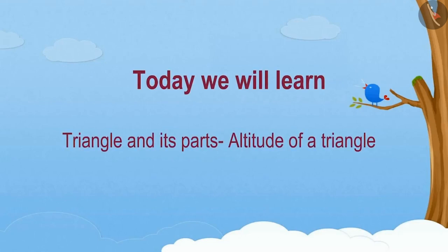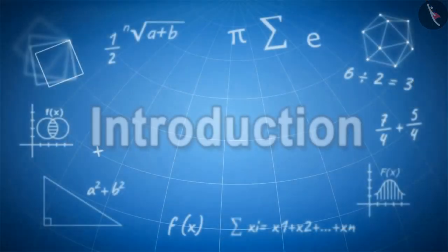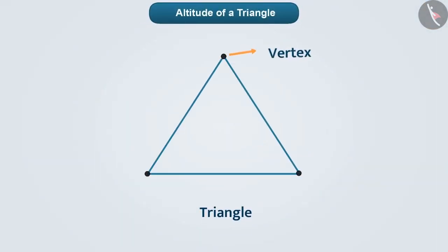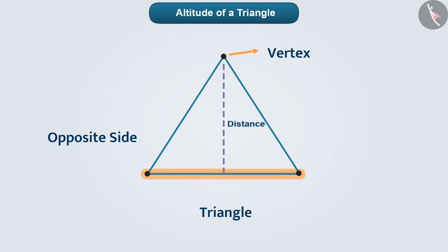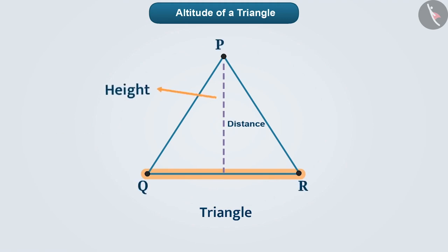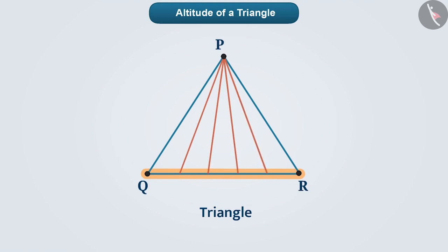Today we will learn about the altitude of a triangle. Sometimes in a triangle it is necessary to find the distance between a vertex and its opposite side. Suppose we are given triangle PQR and have to find its height — that is, the distance between vertex P and side QR. To find the distance we can make line segments in different ways. Do all these give us the correct information about the distance between vertex P and its opposite side QR, or the height of the triangle? Think about it.